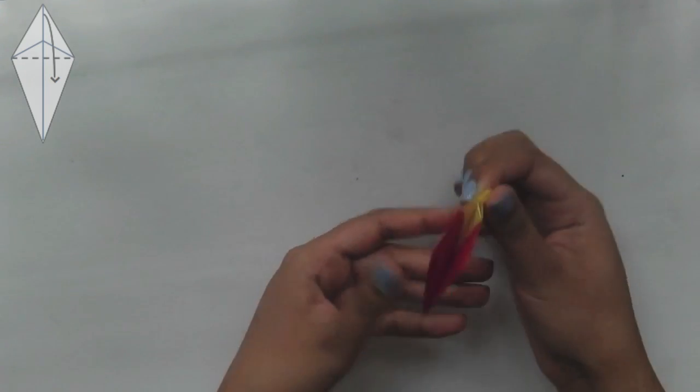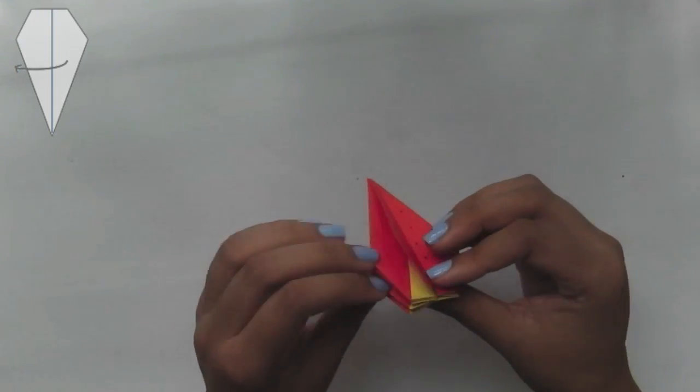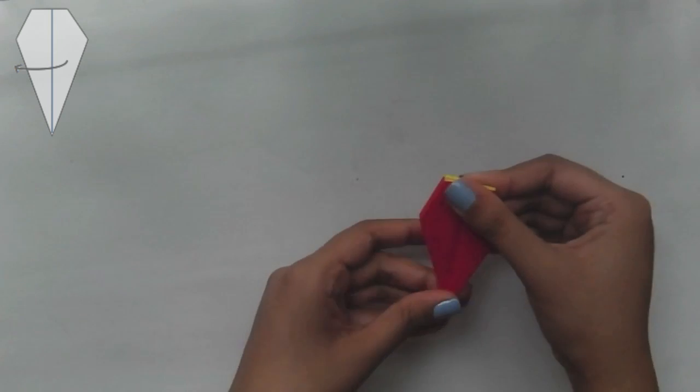Next open the paper to the side where it is only red and fold the flaps. Repeat this on the other three red parts.